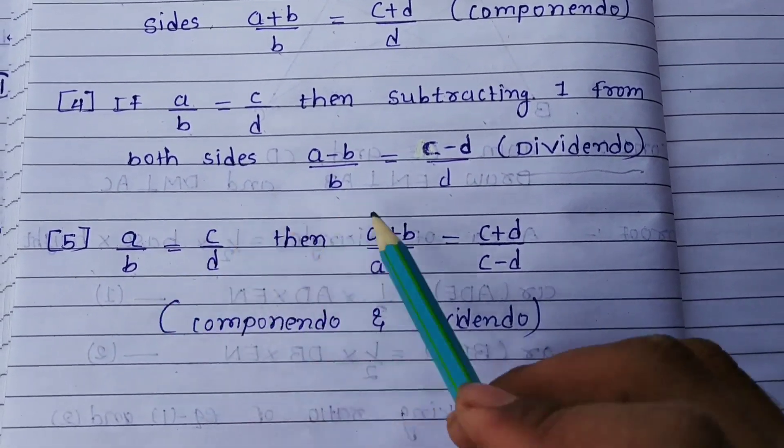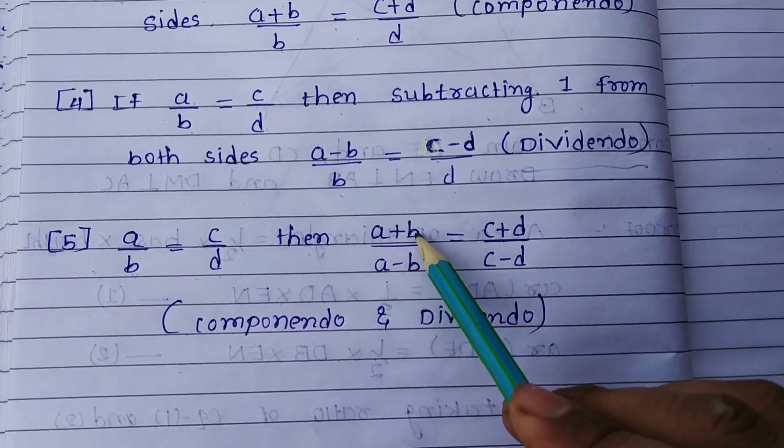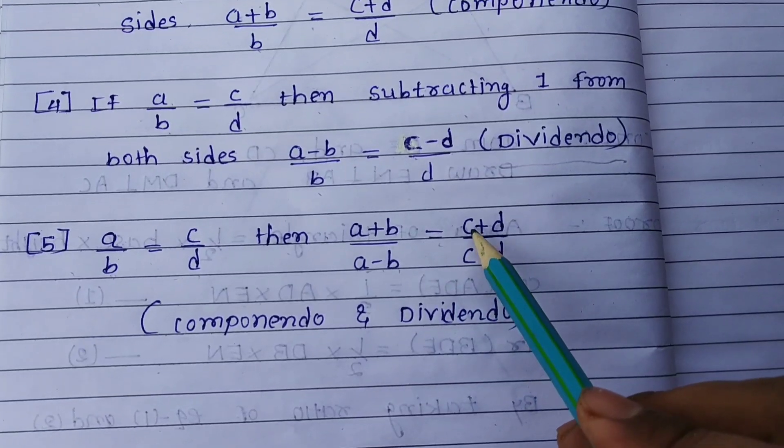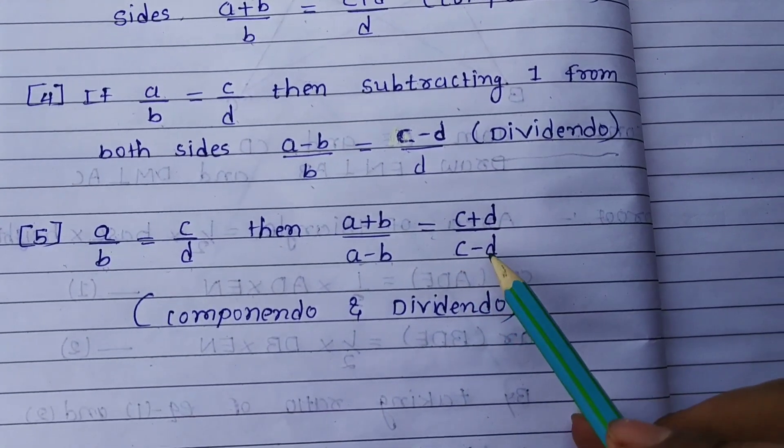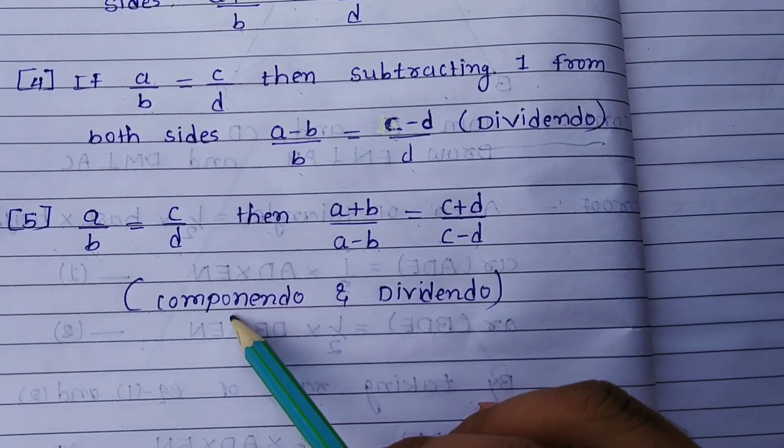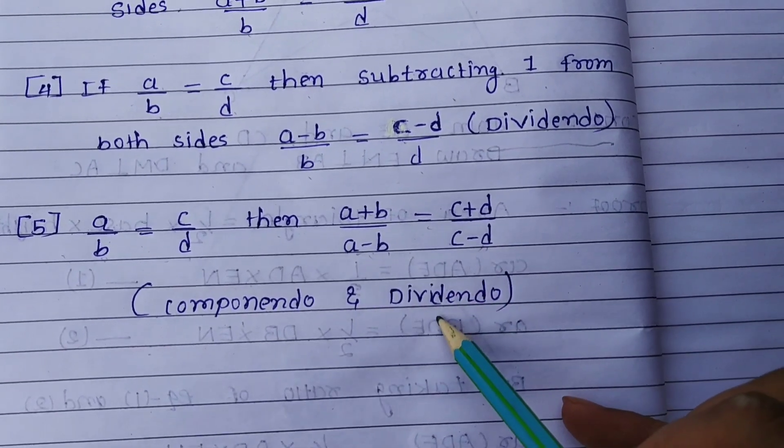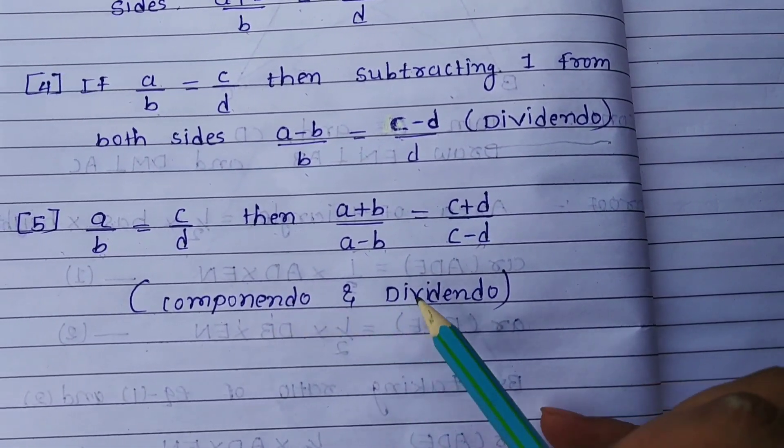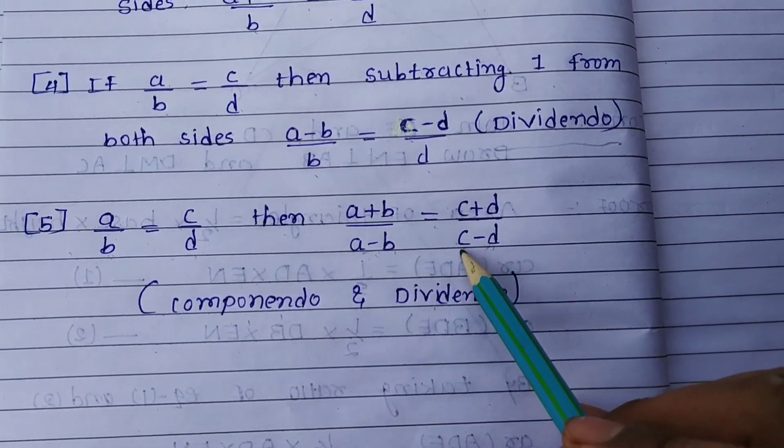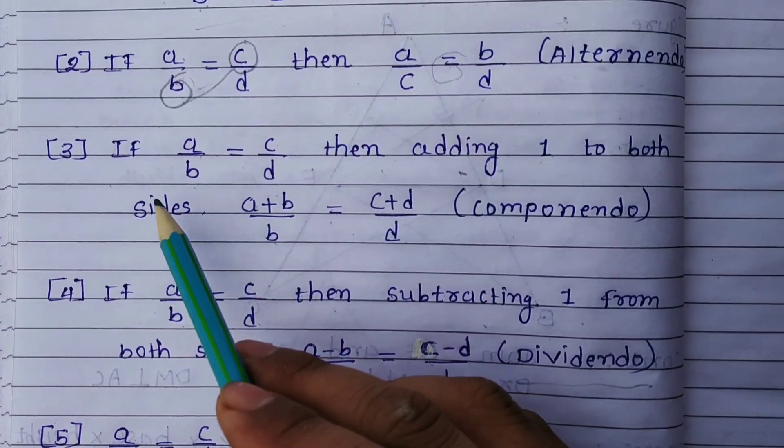Then we take the addition of these two in the numerator and subtraction in the denominator: a plus b upon a minus b is equal to c plus d upon c minus d. In the numerator we do componendo by adding, and in the denominator we do dividendo by subtracting.